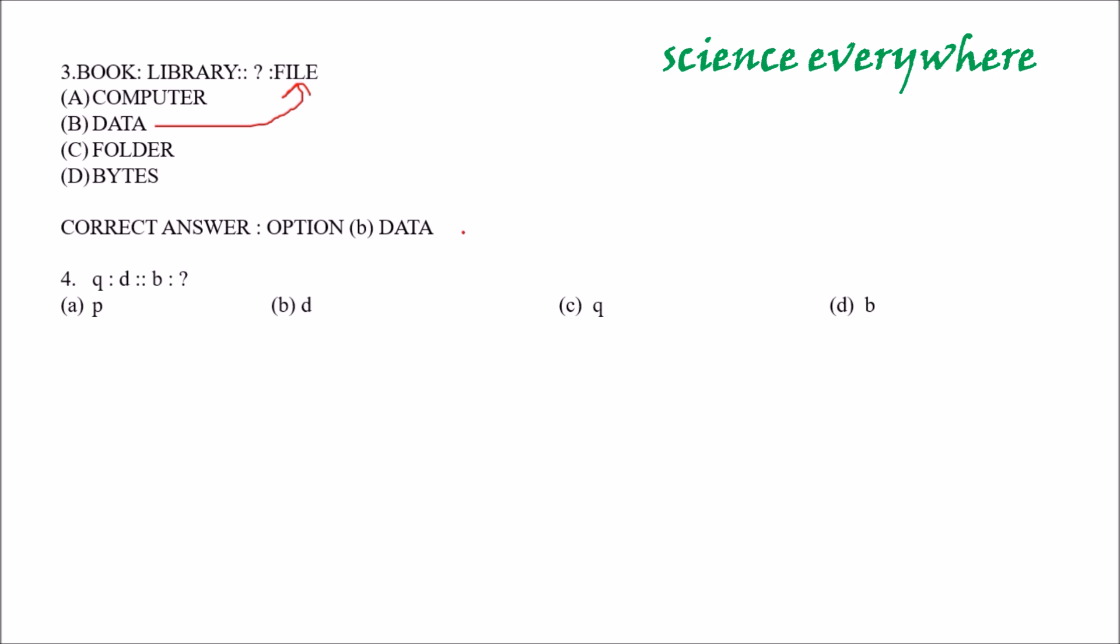Now, question number 4. Q is related with D. So, B will be related with what? This is very simple. If you are going to invert this Q, it will become D. Like this. Similar way, if you are going to invert this B, it will become P. So, our right answer is P.